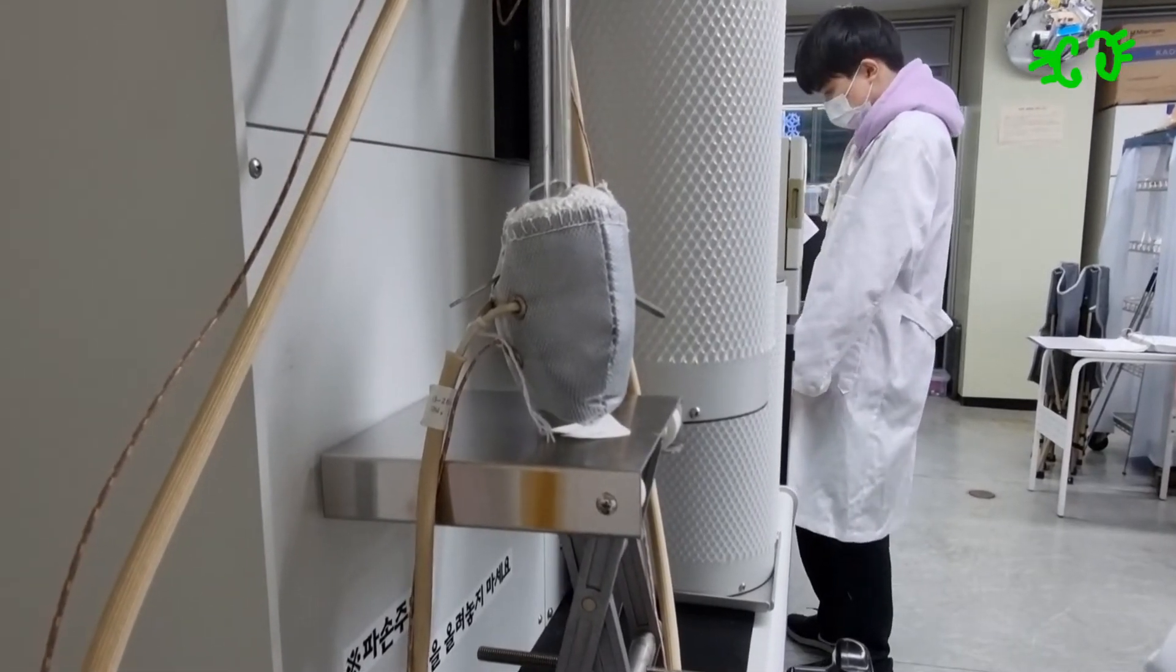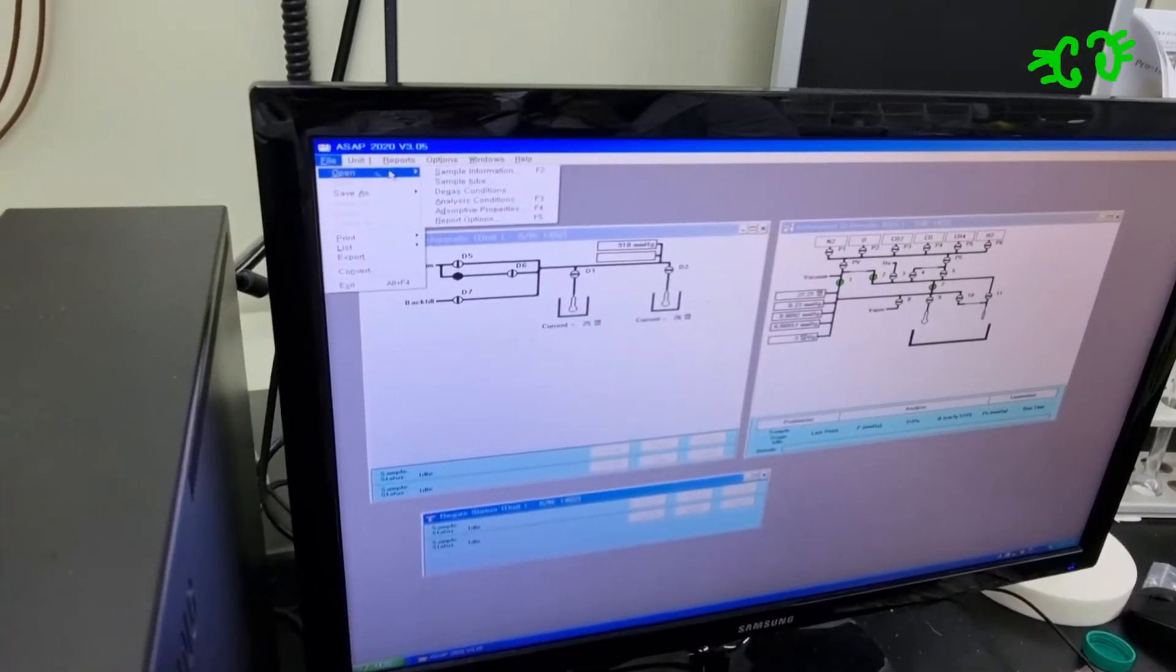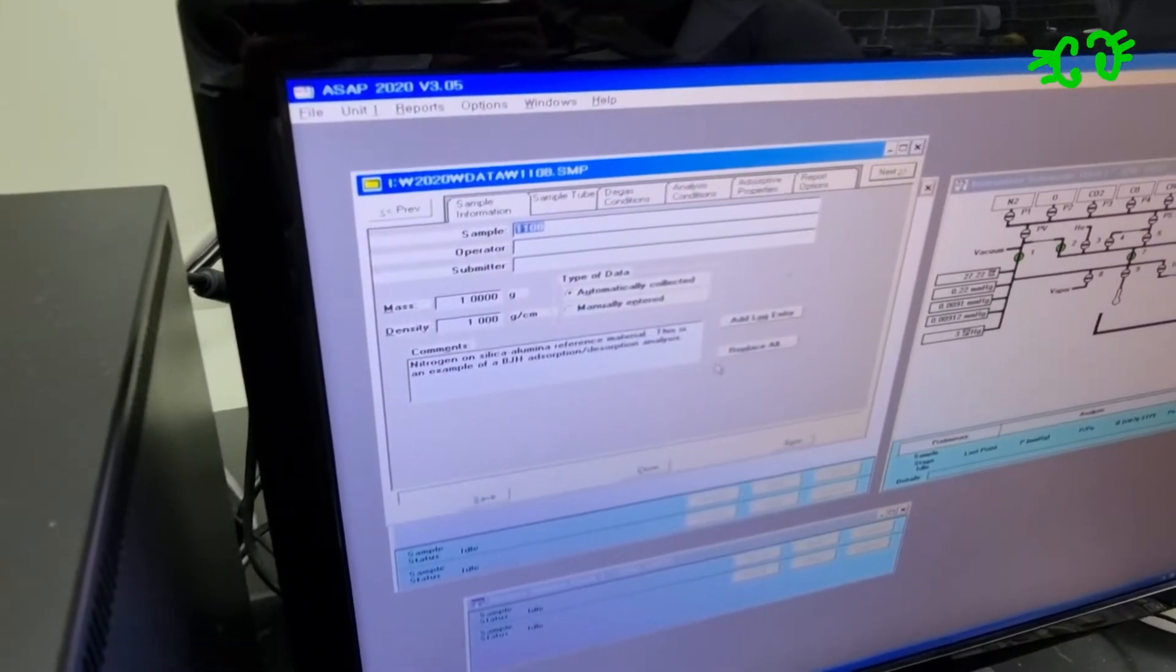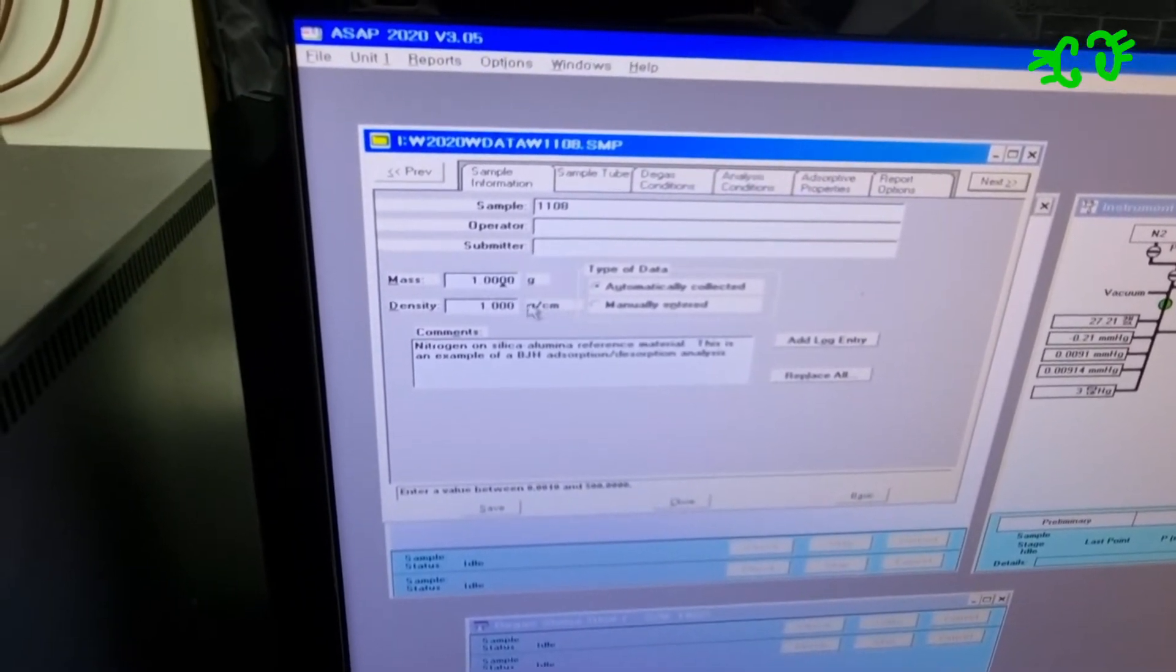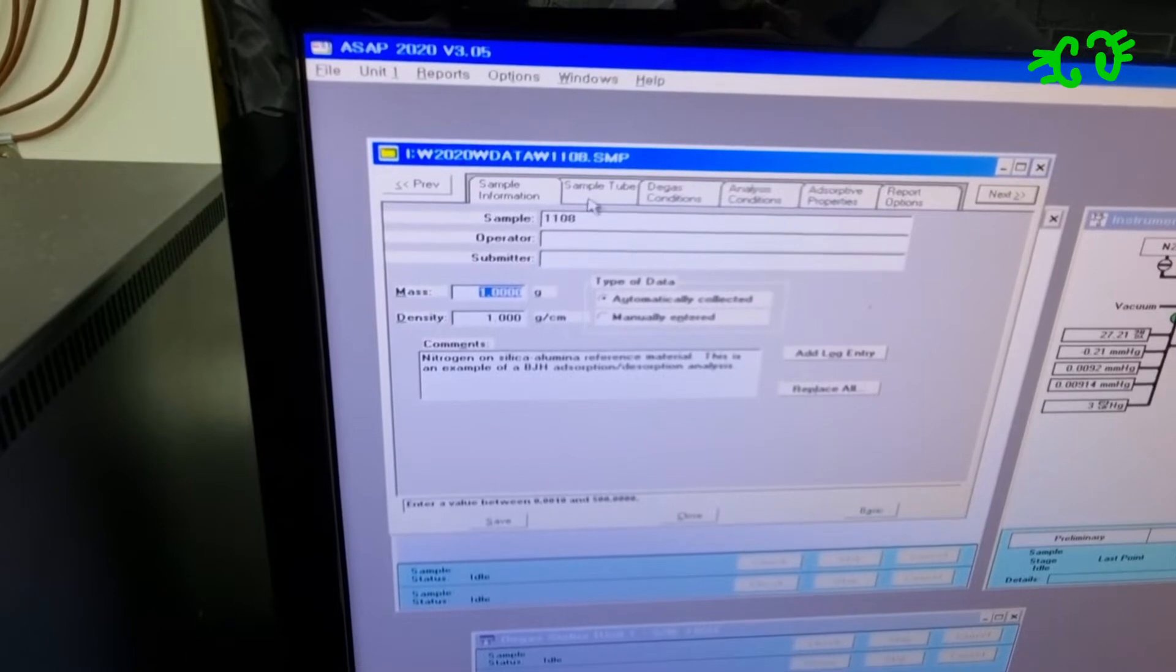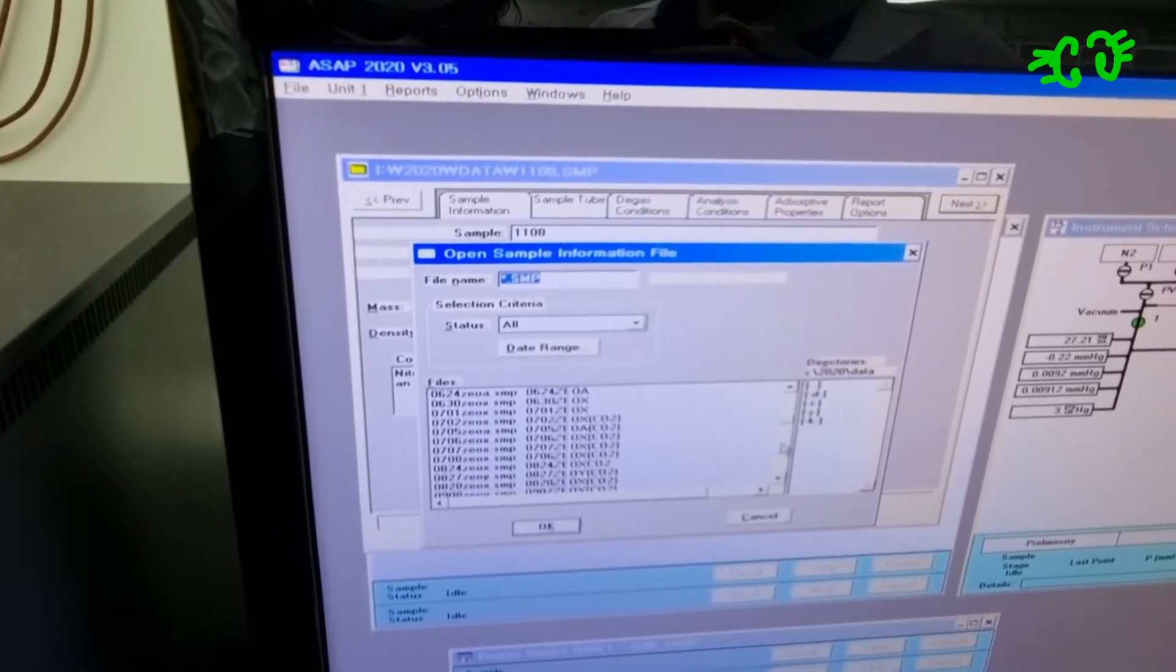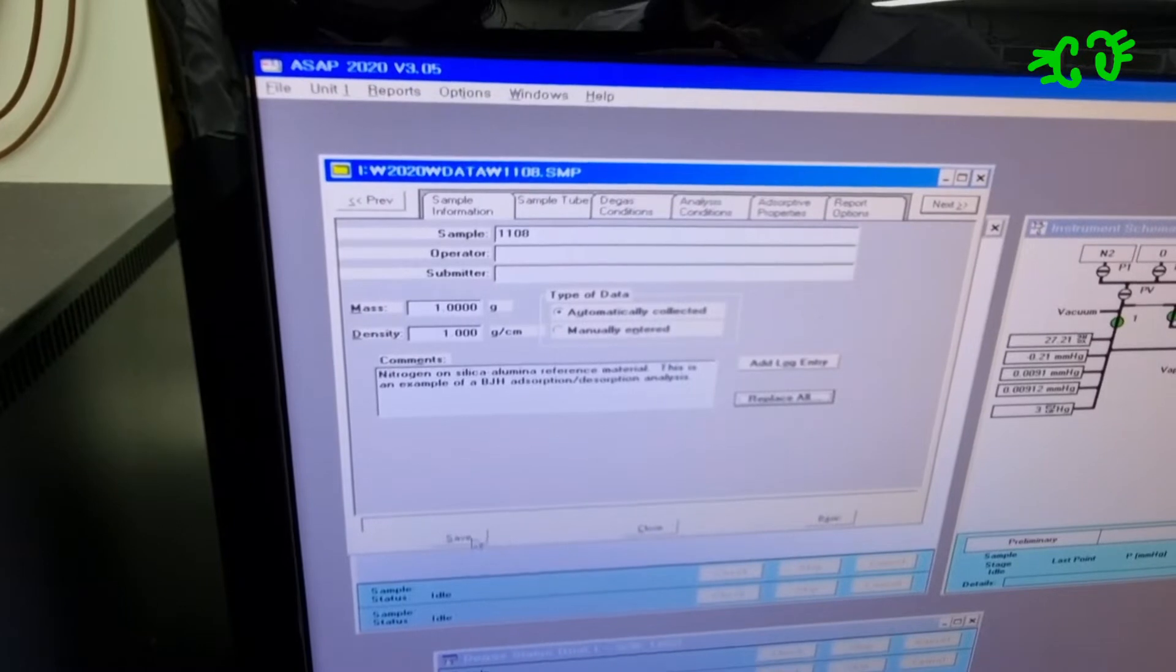You can make the file from here. Open sample information and we can input any name you want, then click OK. Here we should input the mass. We should measure the mass before the preparation and after the preparation. You can click here to put other conditions or information files and save it.